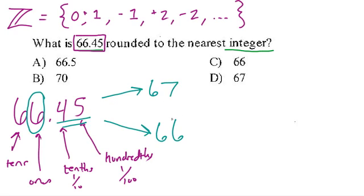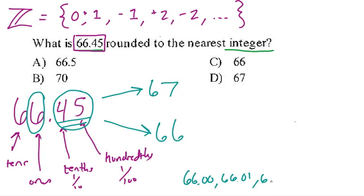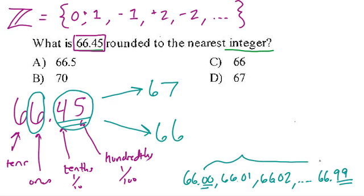How many hundredths are between 66 and 67? If you count the number of hundredths, we're up to 45 hundredths. Altogether there are 100, because you go from 66.00, 66.01, 66.02, all the way up to 66.99. That's 99 minus 00 equals 99, plus one for counting 00 itself, giving a total of 100 hundredths. We're thinking about the distance between 66 and 67.